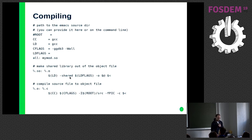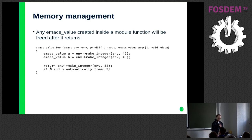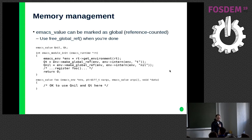Within the API, memory management works as follows: every time a C Lisp function is called, all the values you allocate in it are automatically freed when the function returns, so you don't really have to worry about memory management within the function. You can mark values as global — they're reference counted. If you need to use the same values in two different function calls, you can make them global. For example, you can intern the symbol T — which is true in Emacs Lisp — store it in a global variable, and reuse it without having to intern it again on every call.